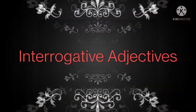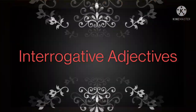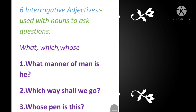The last one is interrogative adjectives. Interrogative adjectives are used with nouns to ask questions. For example: what, which, whose. What manner of man is he? — here 'what' is the interrogative adjective. Which way shall we go? — 'which' is the interrogative adjective. Whose pen is this? — 'whose' is the interrogative adjective.